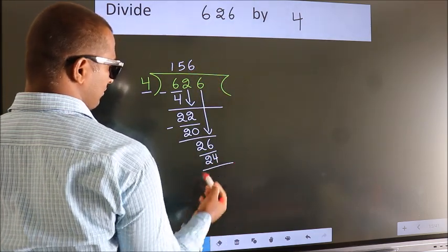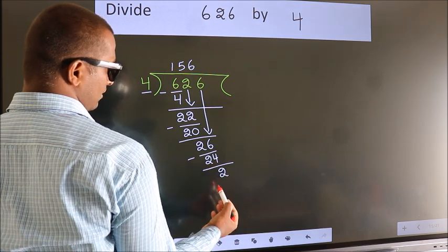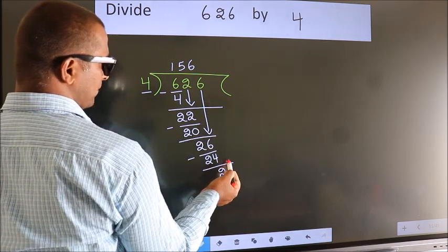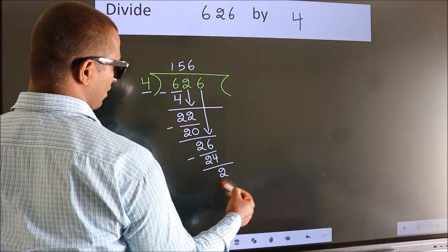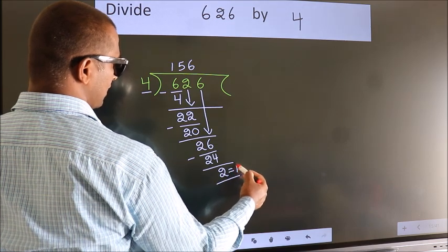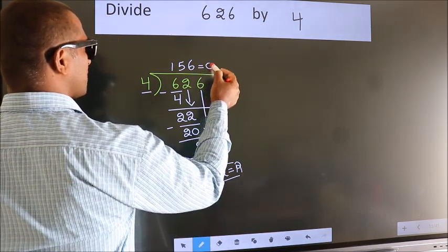Now, we subtract. We get 2. No more numbers to bring it down. So, we stop here. This is our remainder. This is our quotient.